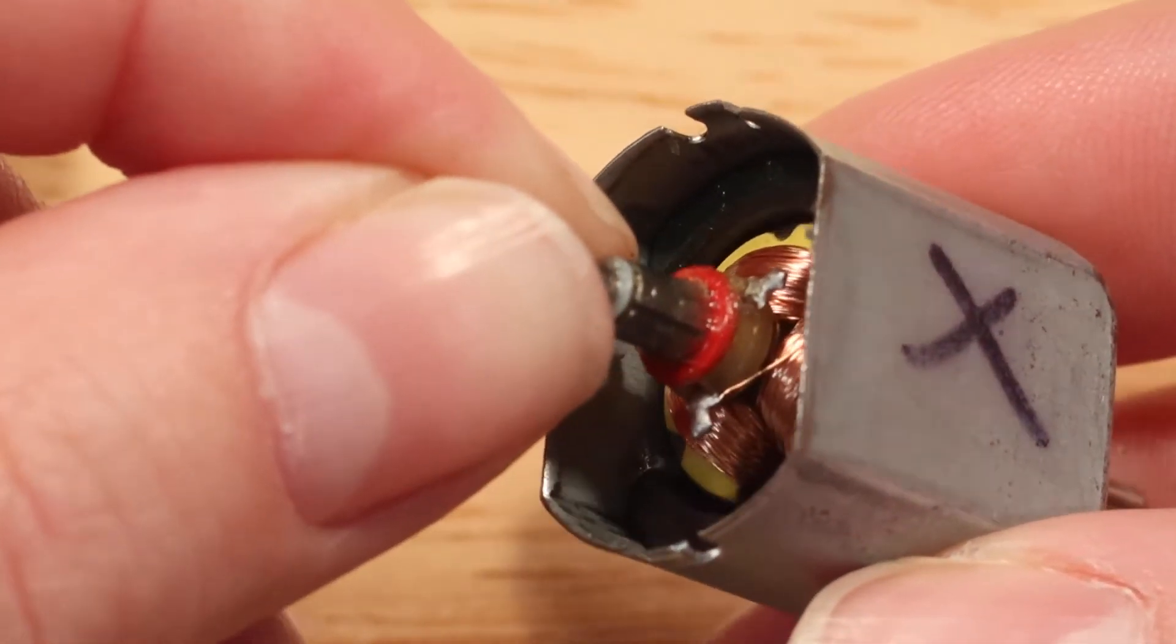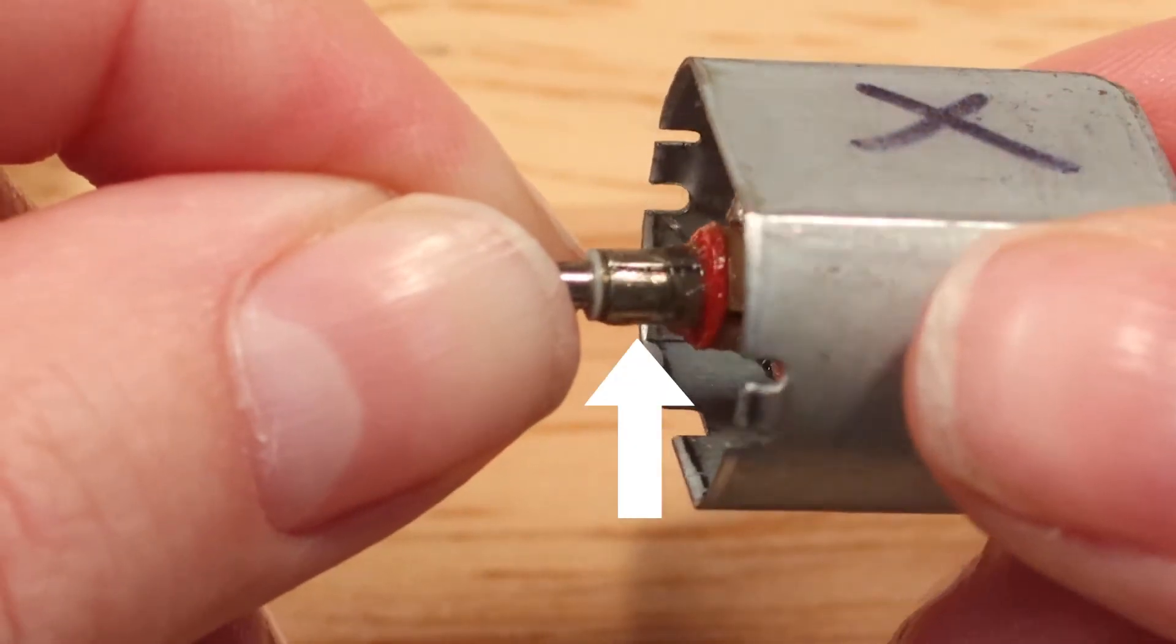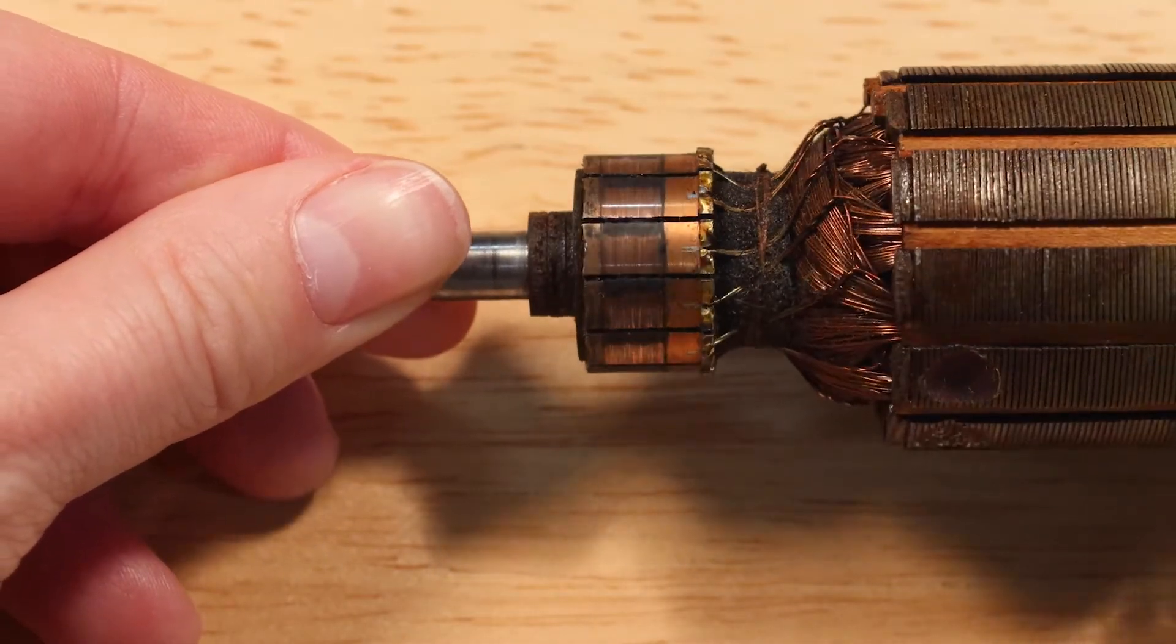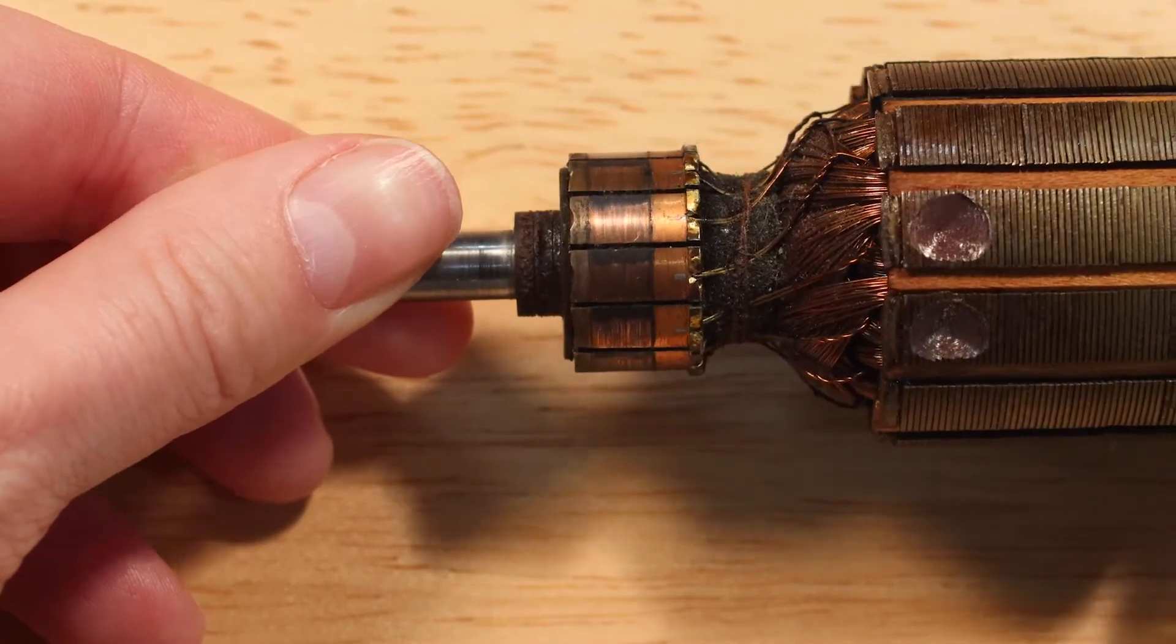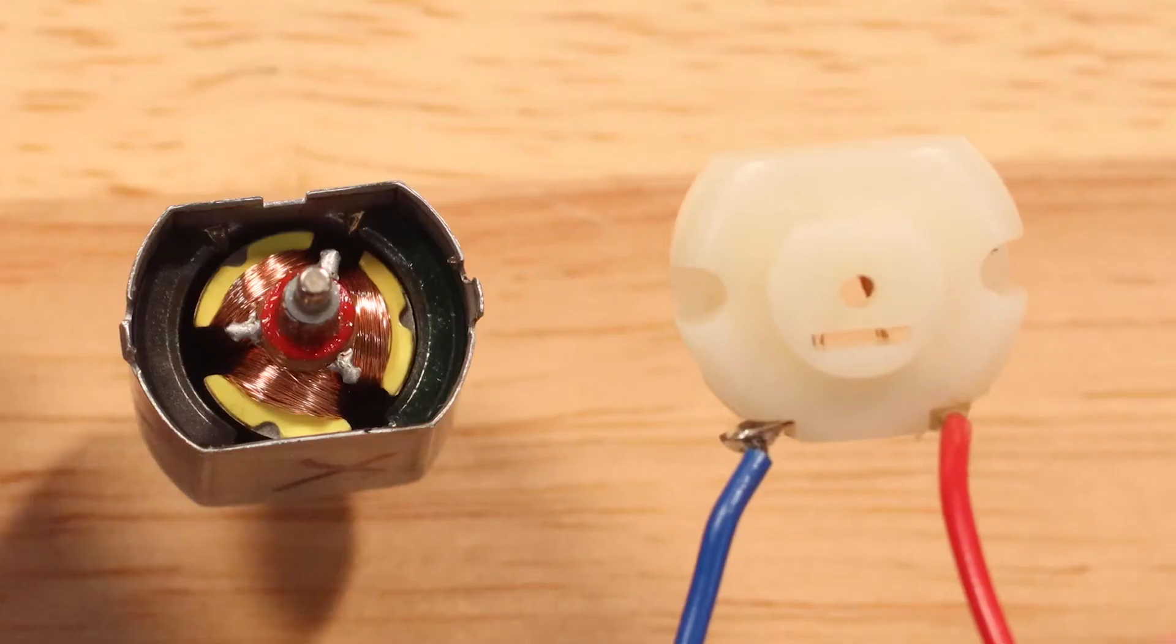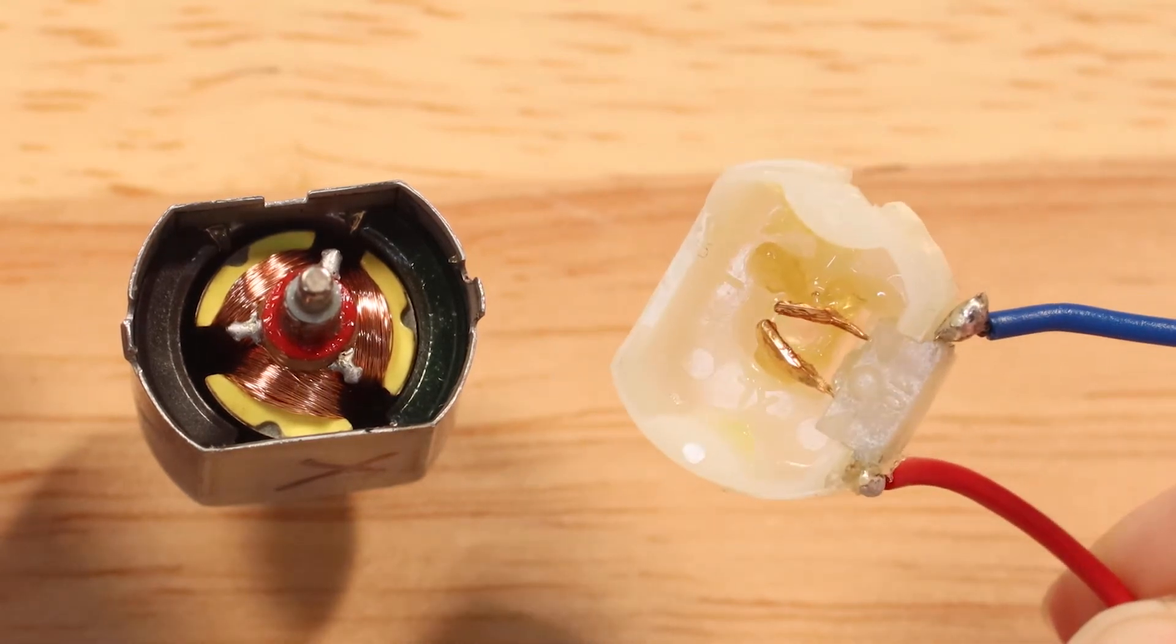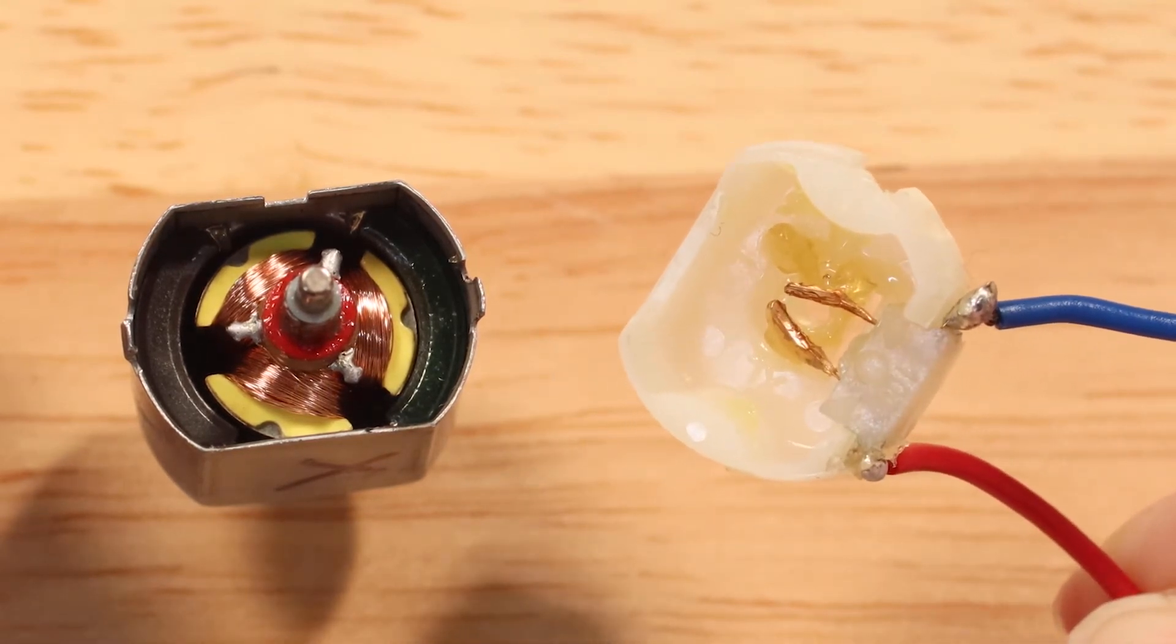It's made of little metal plates that have gaps between them. Those plates are actually how the coils get connected to electricity. The motors I've been showing you are brushed motors. The wires on the outside of the motor connect to little conductive pads on the inside of the motor called brushes.